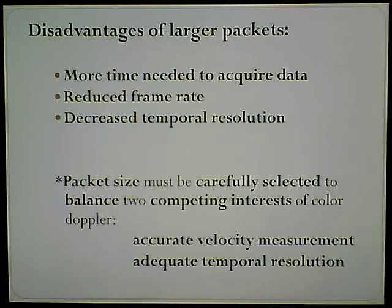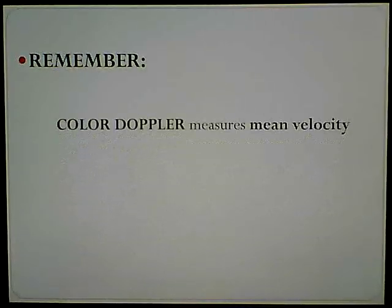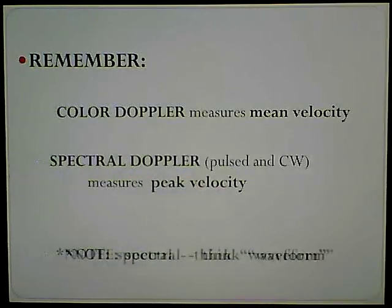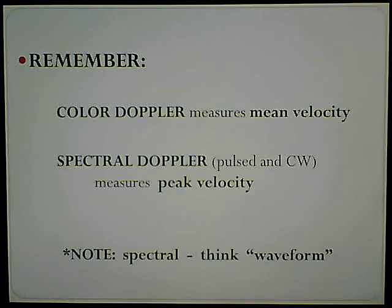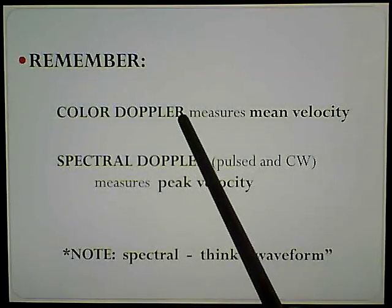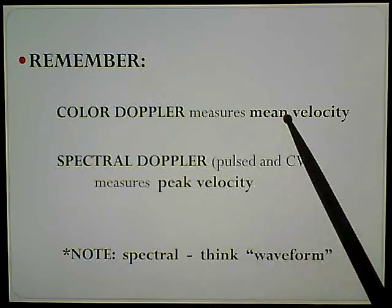Packet size must be carefully selected to balance the two competing interests of color Doppler, which are accurate velocity measurement and adequate temporal resolution - no different from plain black-and-white grayscale imaging. We want a very detailed picture but also very good temporal resolution, so we have to meet in the middle. Remember, color Doppler measures mean velocity - it jumbles them all together and we get an average. Spectral Doppler - pulsed and continuous wave - measures peak velocity, and that's the waveform.